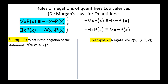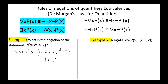Example 1: What is the negation of the statement for all x, x² > x? The negation is: exists x, not (x² > x), which is equivalent to exists x, x² ≤ x.